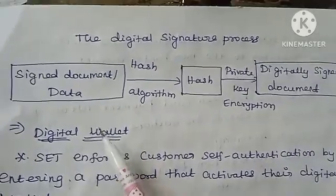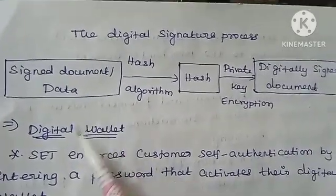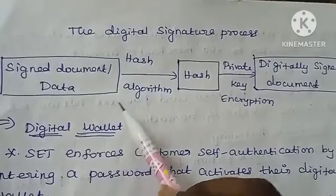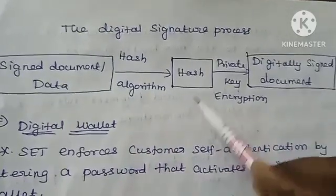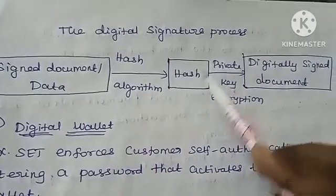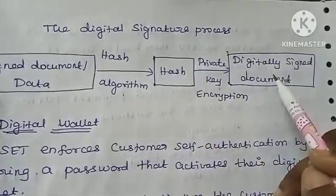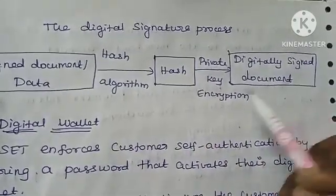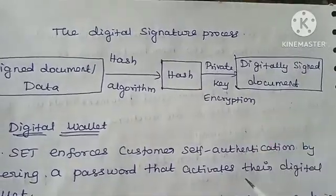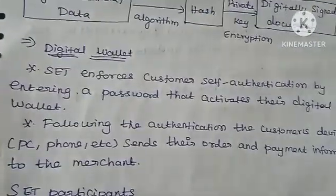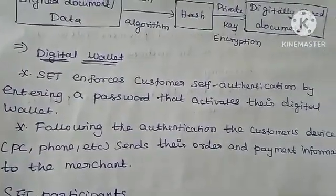In the digital signature process, you sign the document data. It works on a hash, and then it begins the digital signing of the document using private key encryption.